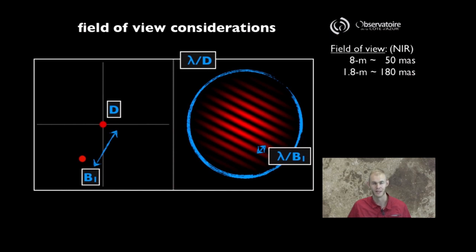then you can compute that in the near-infrared, and those numbers you have here on the screen are for wavelengths of 1.6 microns, that this field of view for an 8-meter telescope is actually limited to 50 milliarcseconds only.